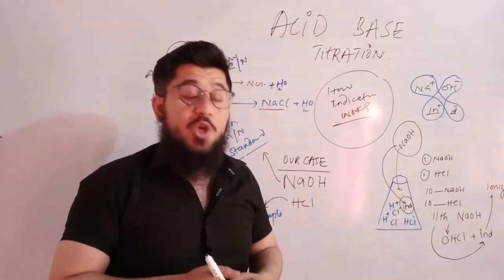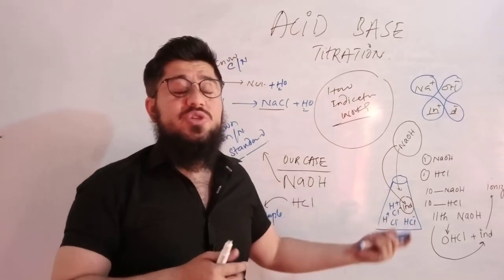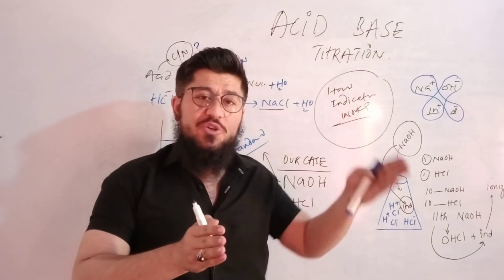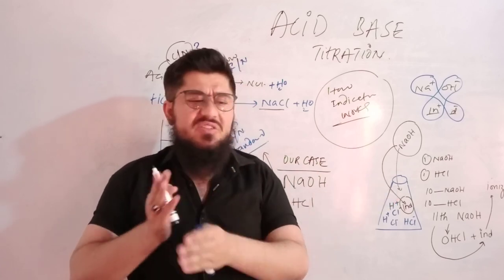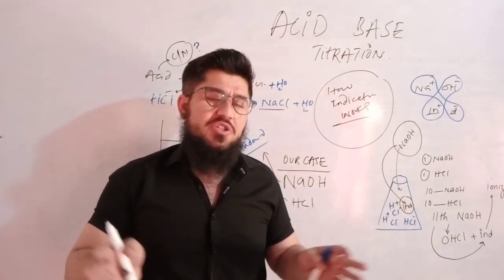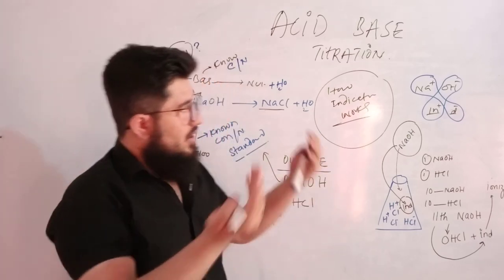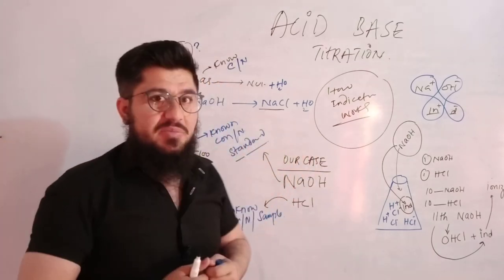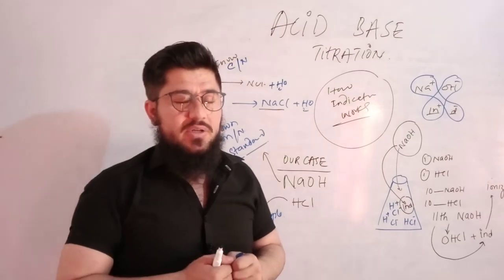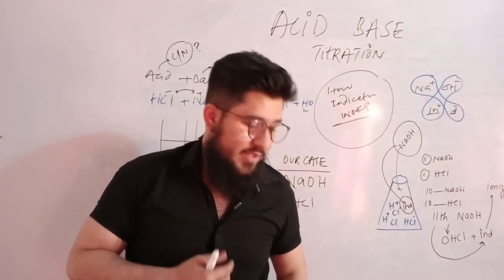As the pink color appears, that is the point where our reaction is complete. So the indicator is actually telling us about the completion of the reaction through this chemical mechanism. Now what remains is to take the values and put them into equations like N₁V₁ = N₂V₂ or M₁V₁ = M₂V₂ to find out the concentration or normality. That's how acid-base titration works and how the indicator works. Hope you understood — if you have any confusion, drop it in the comment box. Thank you.